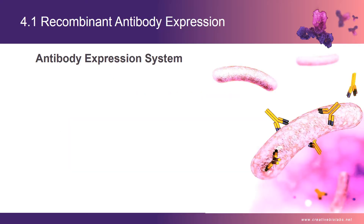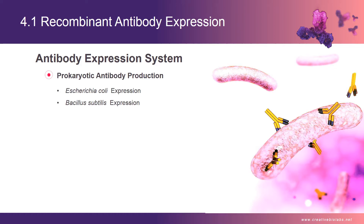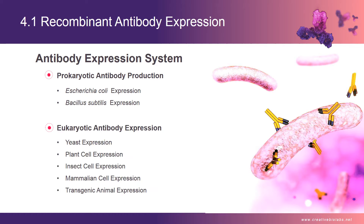There are two expression systems: prokaryotic expression and eukaryotic expression. In the prokaryotic expression system, there are two universal hosts: Escherichia coli and Bacillus subtilis. There are many hosts in the eukaryotic expression system, such as yeast, plant cell, insect cell, mammalian cell, and transgenic animals.